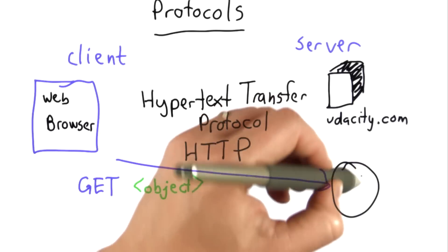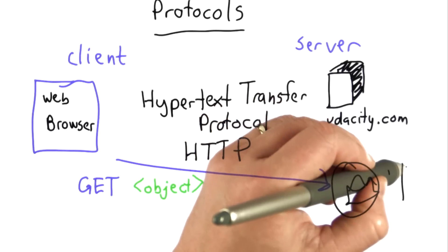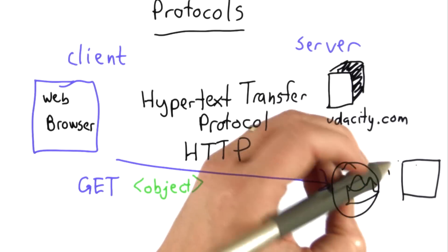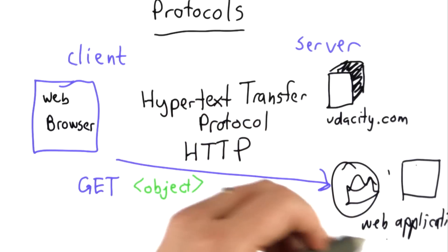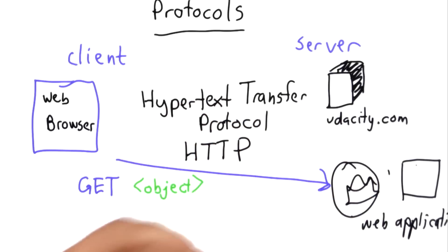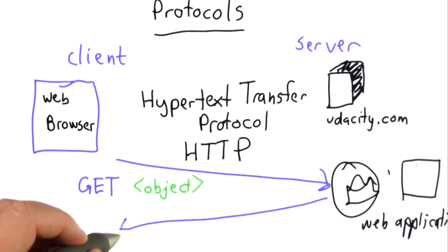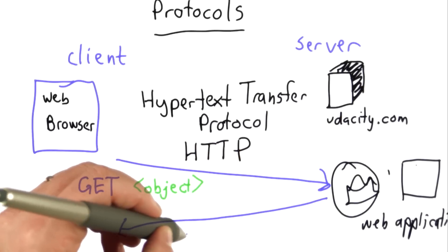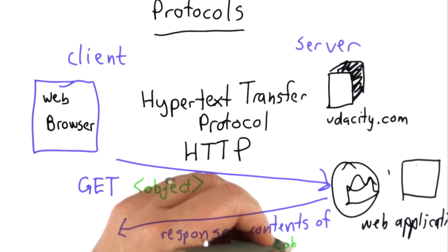The server will get that message. It will run some code on it, find the file that was requested, and it might run some more code to get the result. Take the web application course to understand more about what the server does. But what matters to the client, and what matters to us in using this, is what happens after that — the server sends back a response, which is the contents of the requested object.